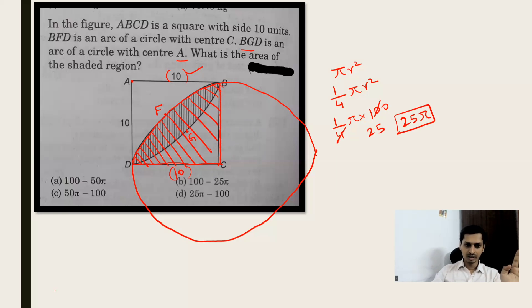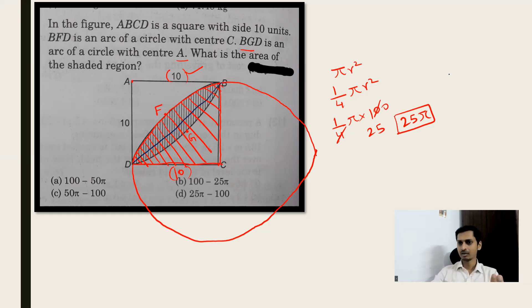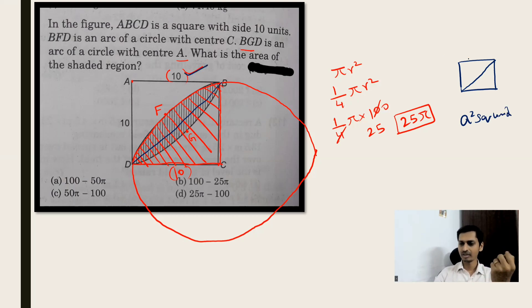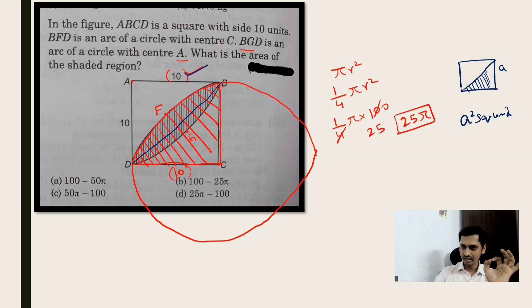Now I connect B and D. I change the color for clarity — I connect B here and D here. This line BD is a diagonal of the square. I have a square and I connect two points diagonally, so this is called the diagonal. The area of a square is a² square units, where a is the side length.